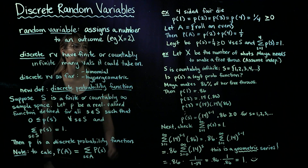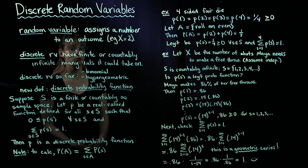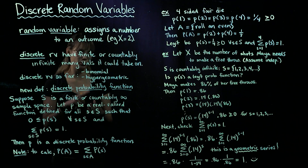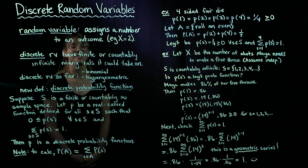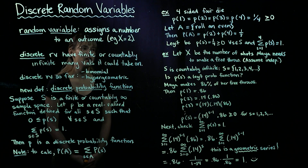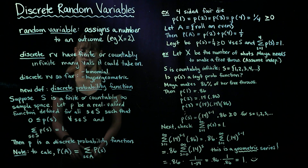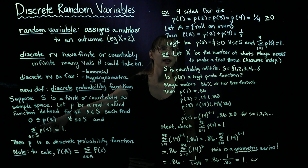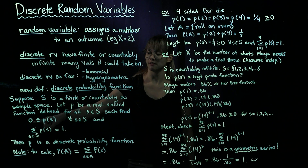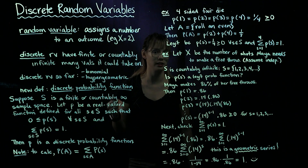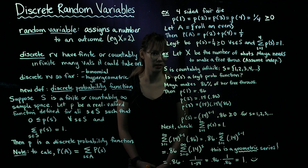So let's look at a couple examples. In our first example, we have a four-sided die, and it's a fair four-sided die. So that means that it's equally likely to land on 1, 2, 3, and 4. Since it's fair and there are four sides, the probability of getting a 1 is a quarter, the probability of 2 is a quarter, same with 3, same with 4. And of course, one quarter is greater than or equal to 0. We're going to want to check if this is a legit probability function, and one piece of that is making sure that all of these probabilities are greater than or equal to 0.